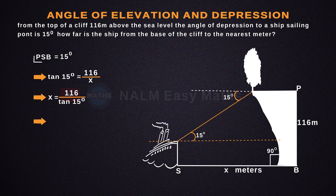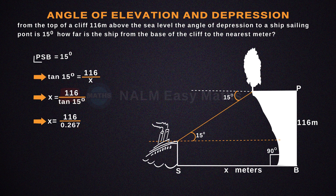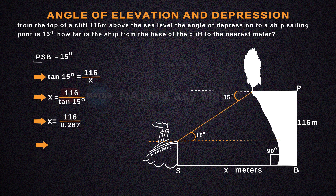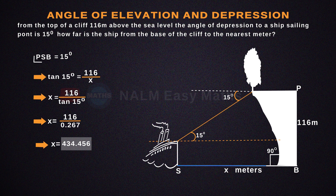X equals 116 divided by 0.267, giving us X equals approximately 434 meters. Therefore, the final answer — the distance from the ship to the base of the cliff — is approximately 434 meters.